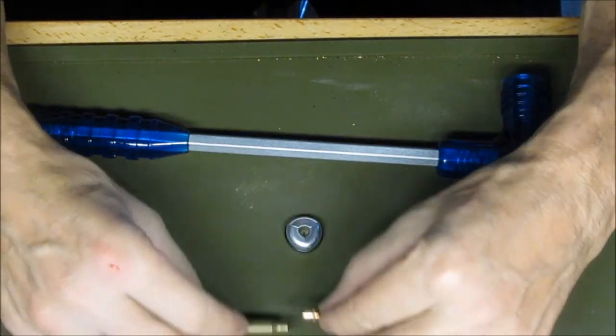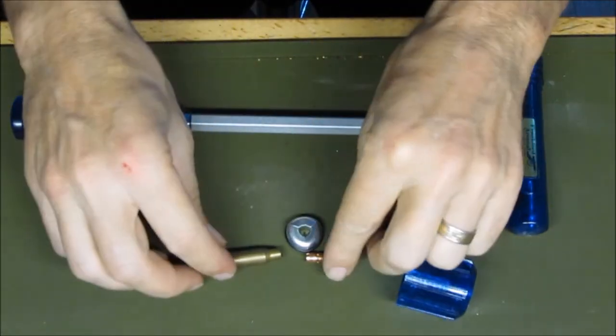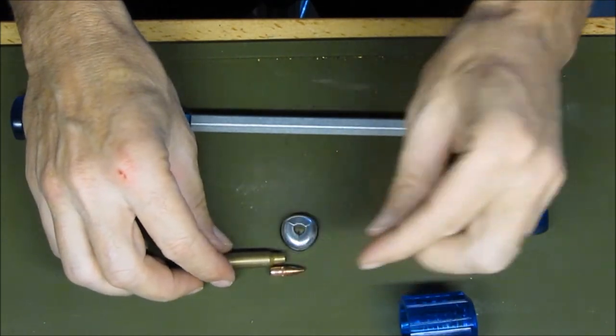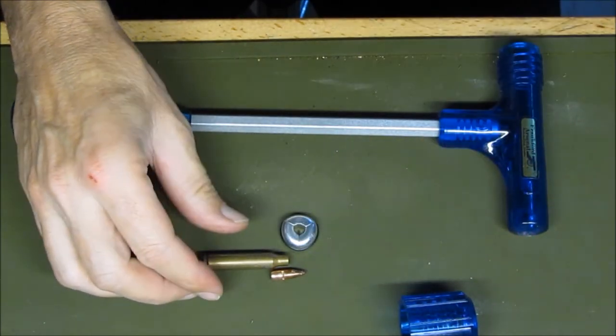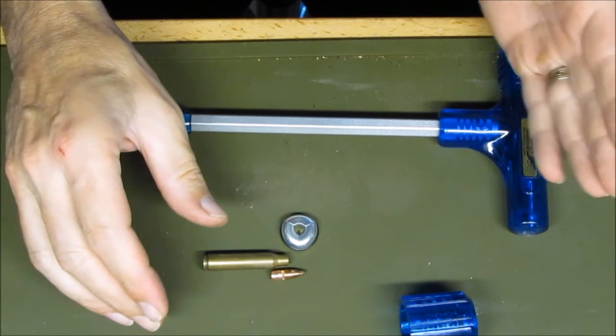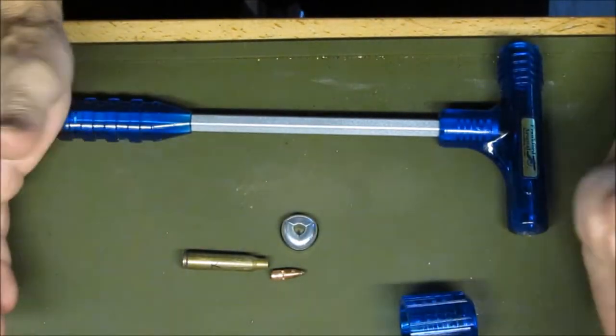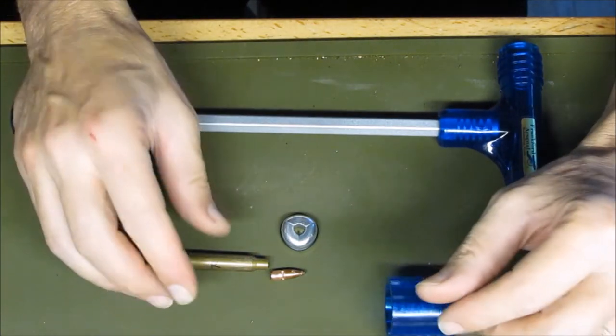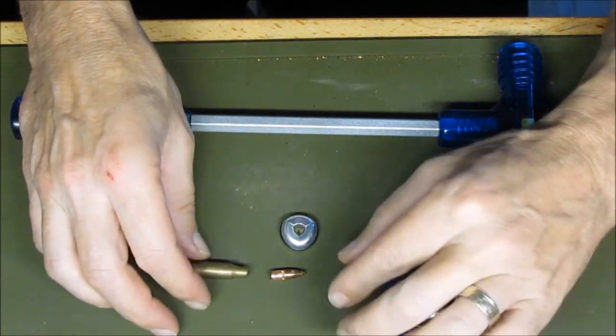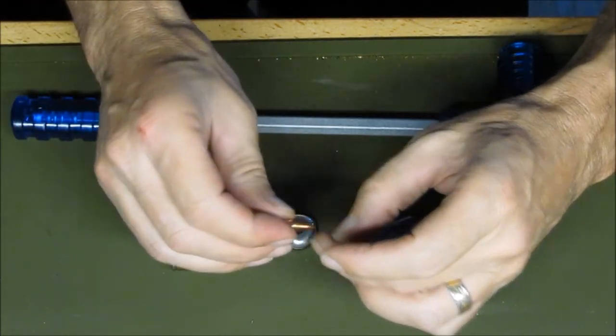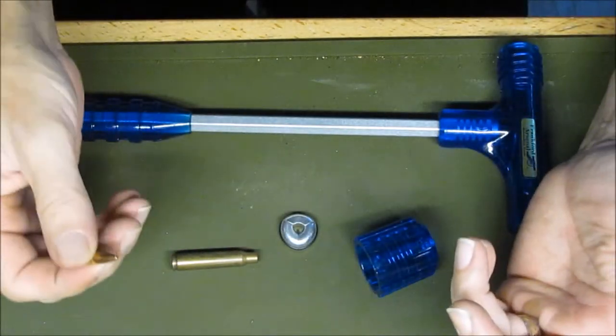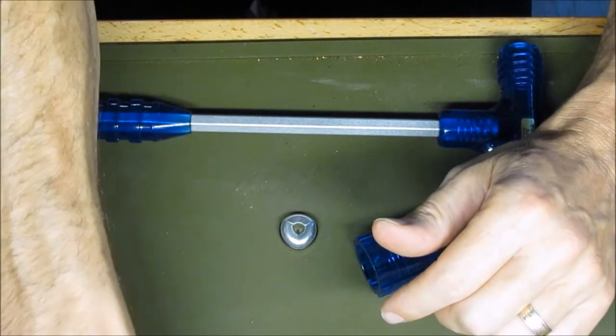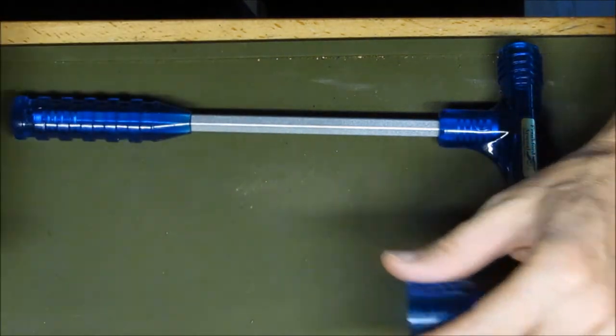So this one was a little bit harder to get out because that bullet had been wedged down inside the casing pretty deep, so it took a lot more hits than it normally does. Normally, two or three good whacks and the bullet will pop right out. But if that bullet gets lodged down in there like this one did, it takes a little bit more effort.